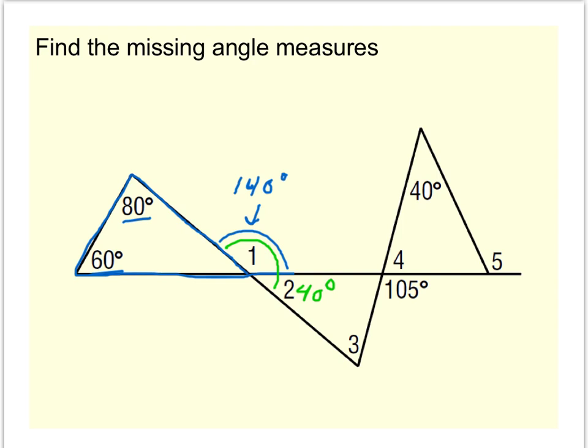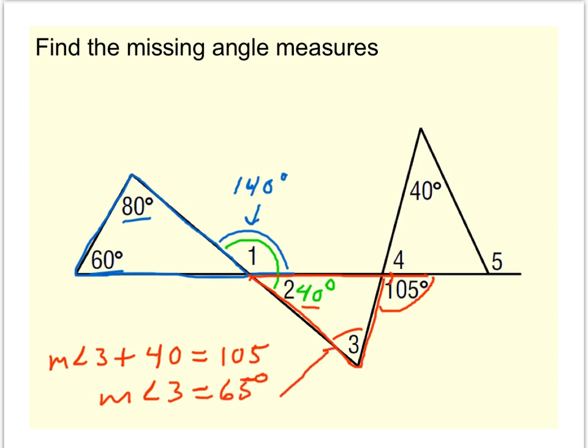Now, to find angle 3, we're going to use the exterior angle theorem once again. So take a look at this triangle. Now, in this triangle, the red one, I see 105 is an exterior angle, and the remote interiors are 40 degrees and angle 3. So that means the sum of the two remote interior angles is equal to the exterior. And so we can solve: measure of angle 3 is whatever 105 minus 40 is. So angle 3 is 65 degrees.